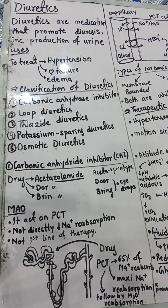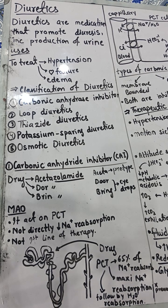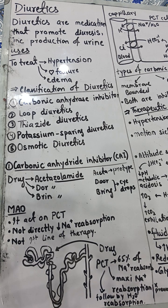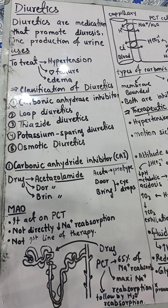Diuretics treat hypertension, heart failure, and edema because they release more water and salt through your urine. Whenever there is a decrease in blood volume, there is a decrease in blood pressure, and as a result you can treat a patient who has hypertension. For heart failure, we need to decrease stress on the heart by decreasing blood volume or blood pressure.